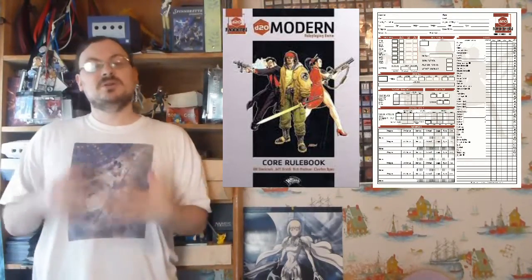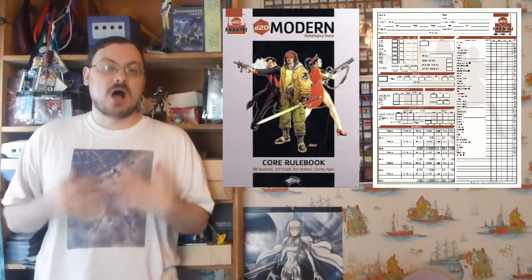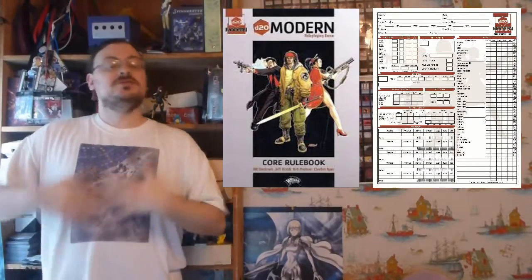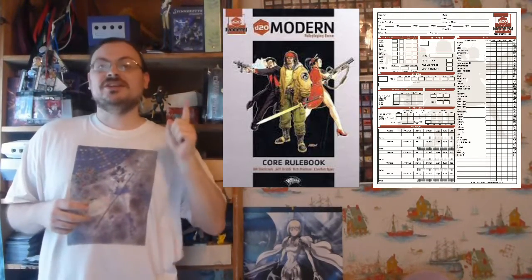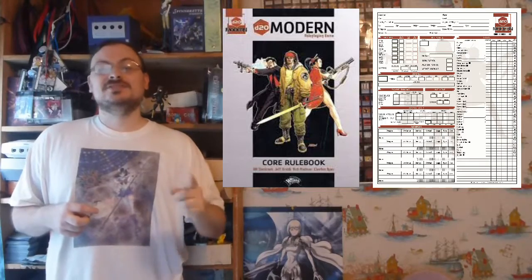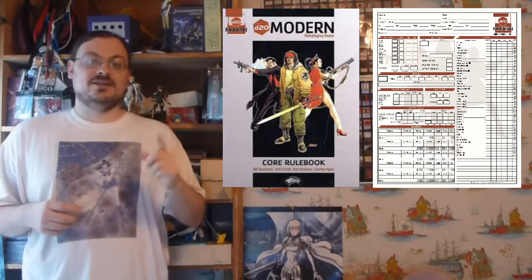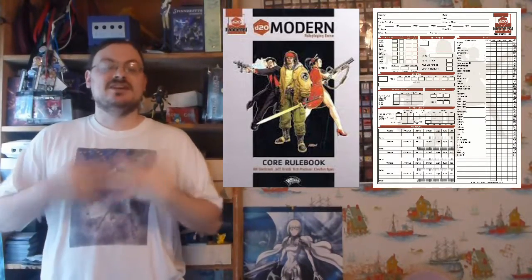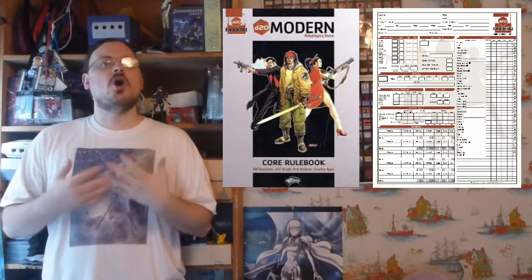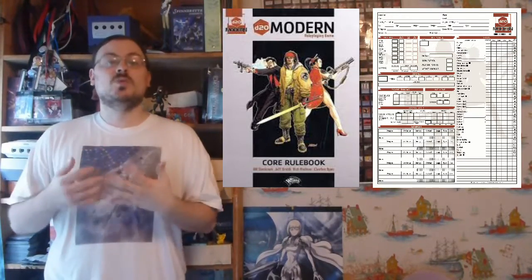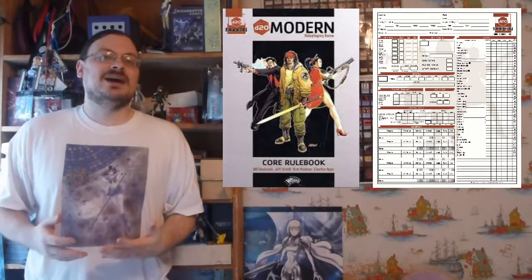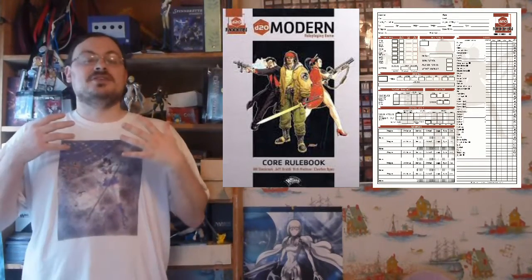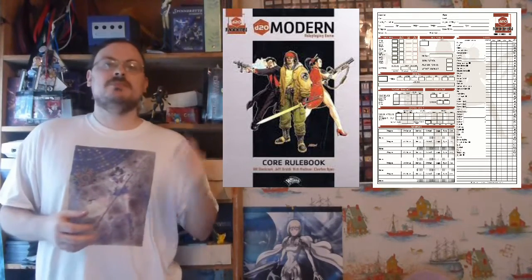Let's talk about the ability scores in D20 Modern. The way you choose ability scores in D20 Modern is chosen in one of three different ways. The first one is 4D6, take away one die, and arrange those numbers down the line. That's one of the basic ways — it's one of the ways that has sort of evolved away from it, but it is an option. There is, of course, a point-buy system. I've talked about these in both D&D 5th edition and Pathfinder — there's a point-buy system here.